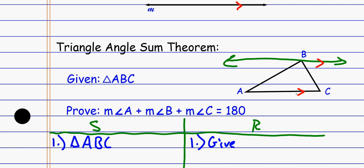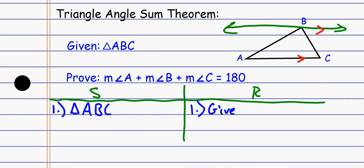What I'm going to do is draw a line through point B that's parallel to AC. I know I can do that because I know there's one line that exists, and I'm constructing that line. I'll add a point D up here. So now I can say that line AC is parallel to line DB, and I can say that because of the parallel postulate.